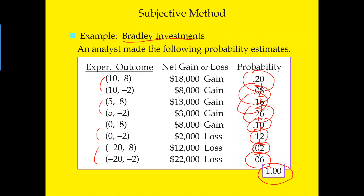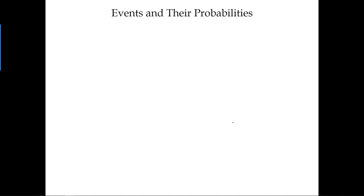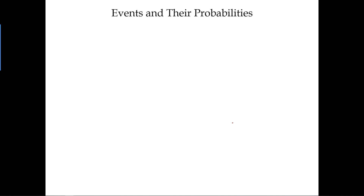This confirms the subjective method satisfies the second condition: all probabilities must add up to one. In our next video, we're going to look at events and their probabilities and the basic relationships between them. We will come back to this Bradley Investment example and use these subjective probabilities to work on different events.